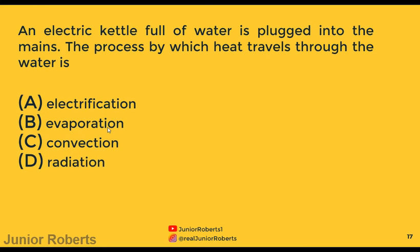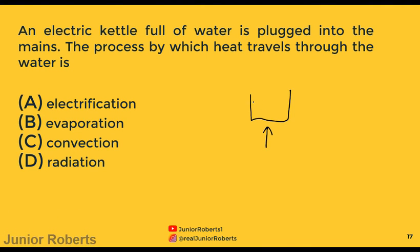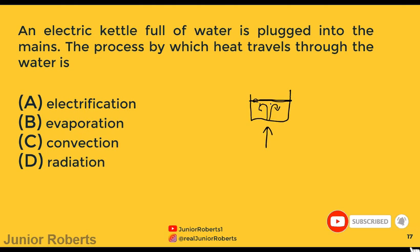This question asks about an electric kettle full of water: by what process does heat travel through the water? When heat is applied to the bottom of the container, the water there gains heat energy and rises to the top. Cooler, less energized water falls to the bottom, forming convection currents. So the answer is C — convection.